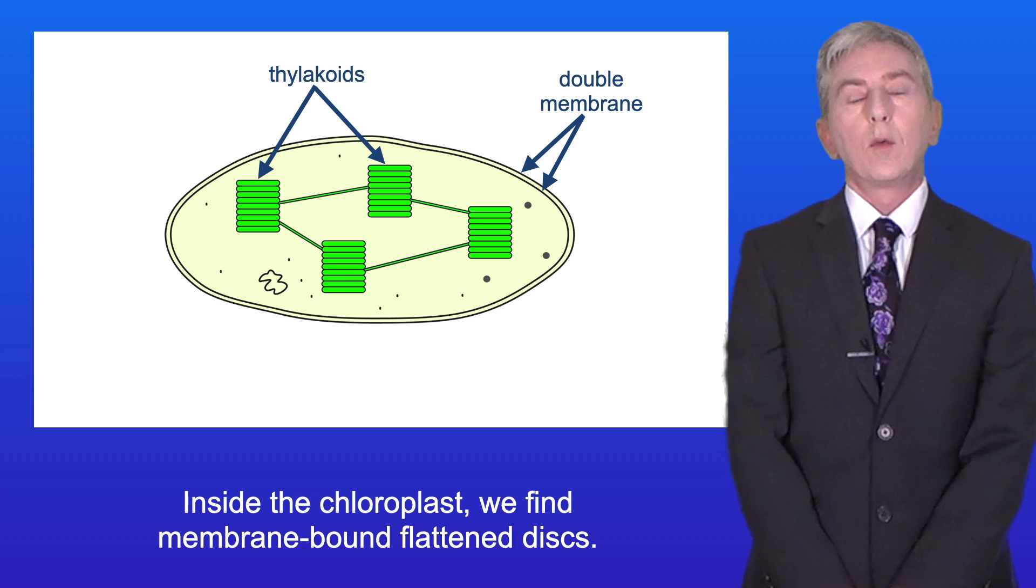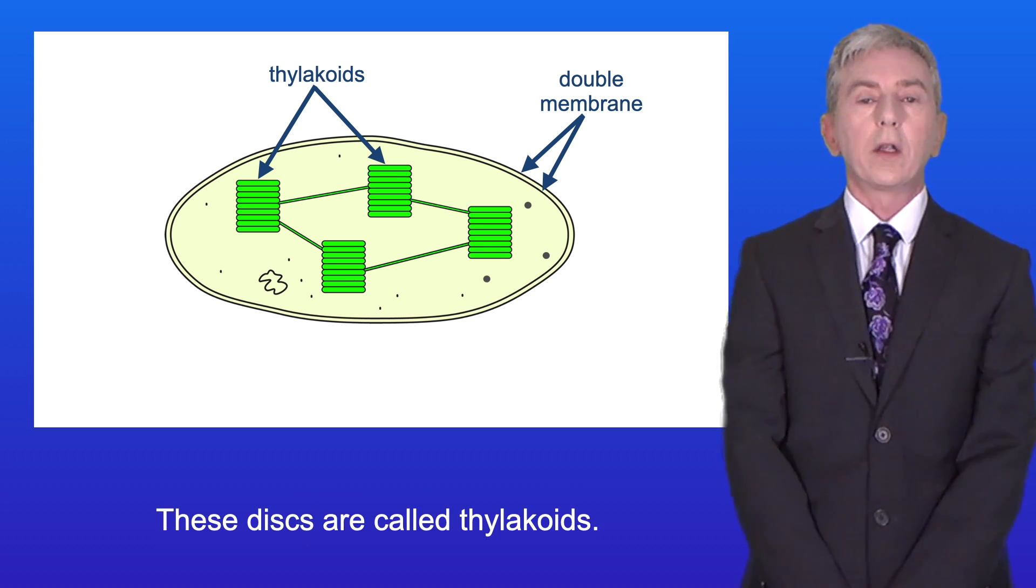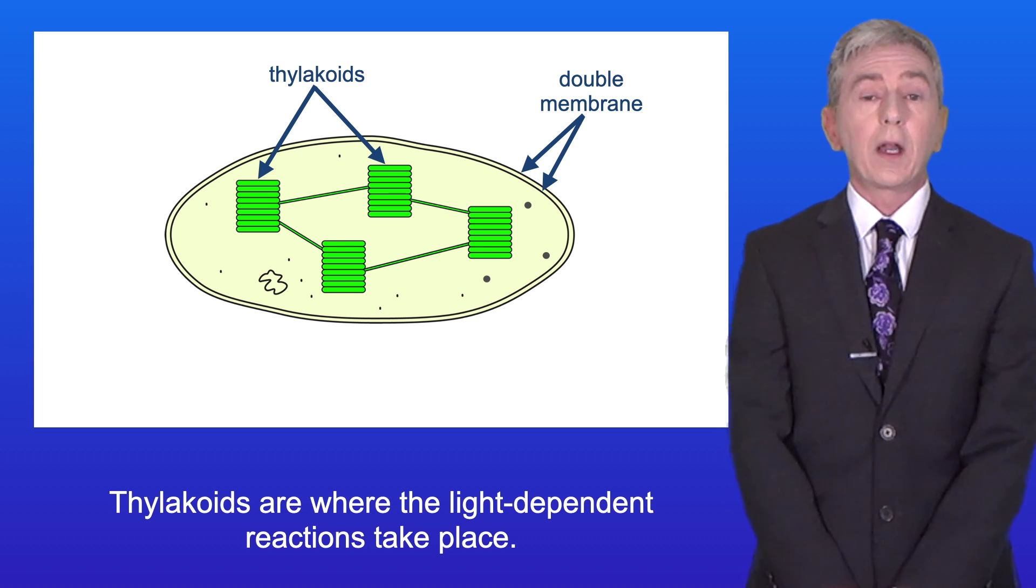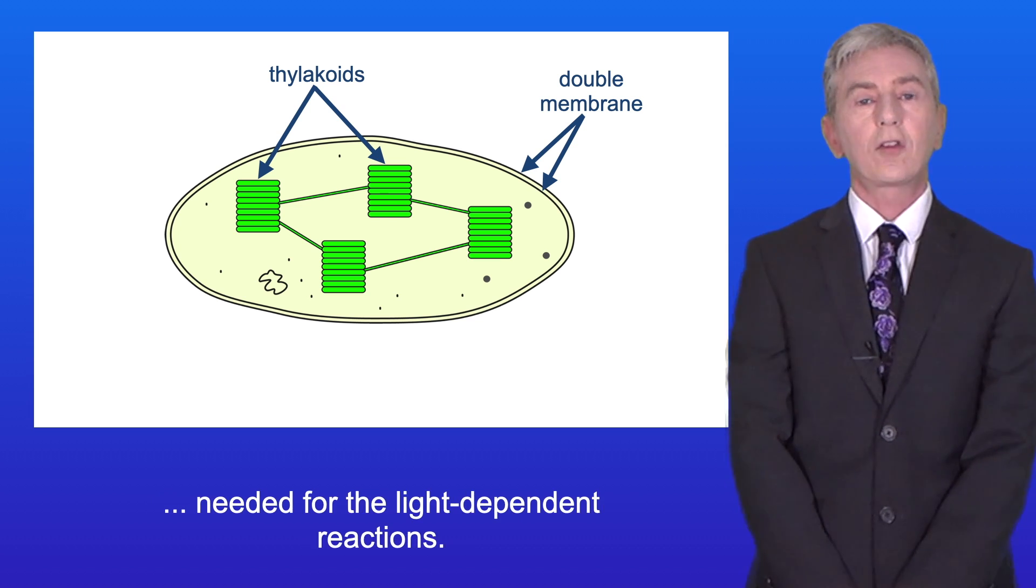Inside the chloroplast we find membrane bound flattened discs. These discs are called thylakoids, and thylakoids are where the light dependent reactions take place. Thylakoids contain the chlorophyll and enzymes needed for the light dependent reactions.